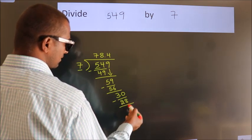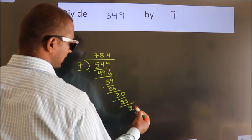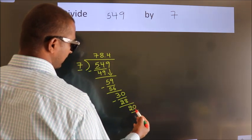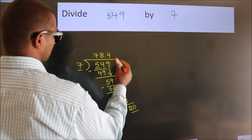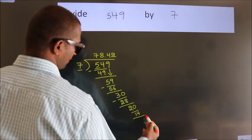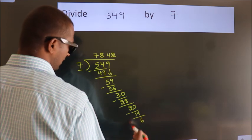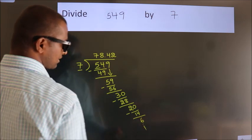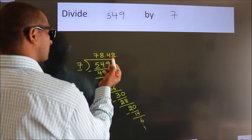After this, we already have the decimal. So directly take 0. So 20. A number close to 20 in the 7 table is 7 times 2 equals 14. Now we subtract. We get 6. And the division continues. It is enough if we do up to 2 decimal places.